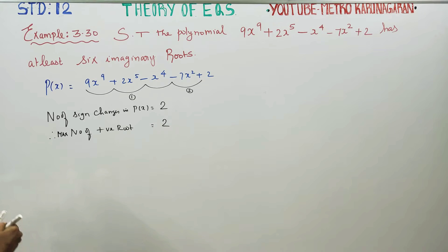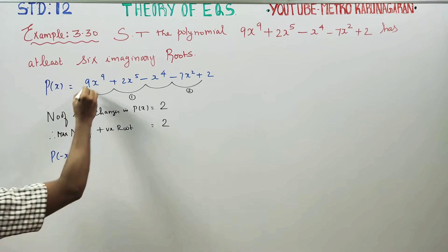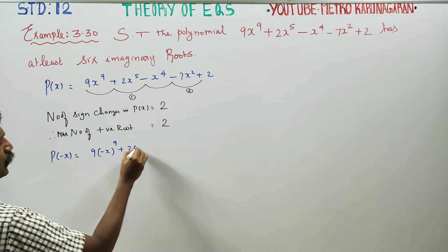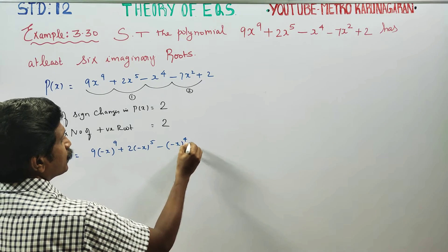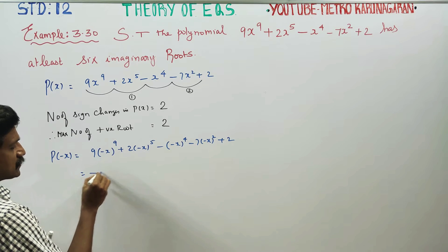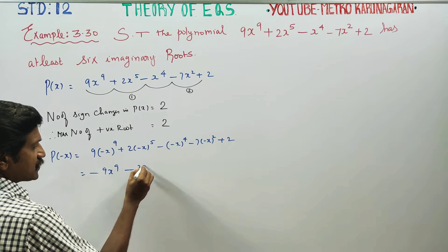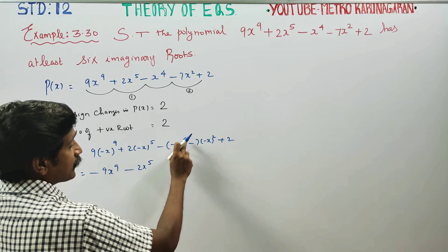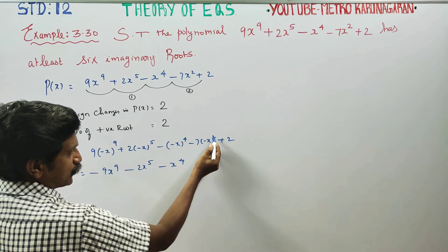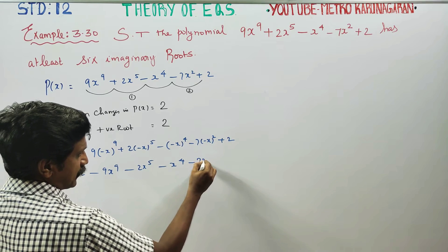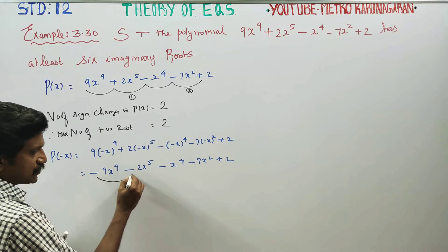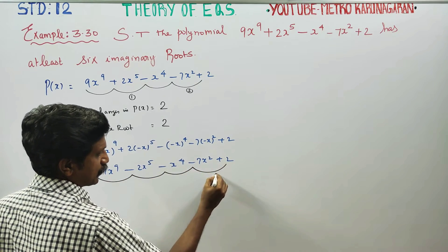Now for p(-x): substituting -x, the terms become 2·(-x)⁵, -(-x)⁴, -(-x)², plus 2. Since odd powers give a sign flip: minus, and even powers do not flip. We get 2·(negative) and negative x⁴, minus x² plus 2.